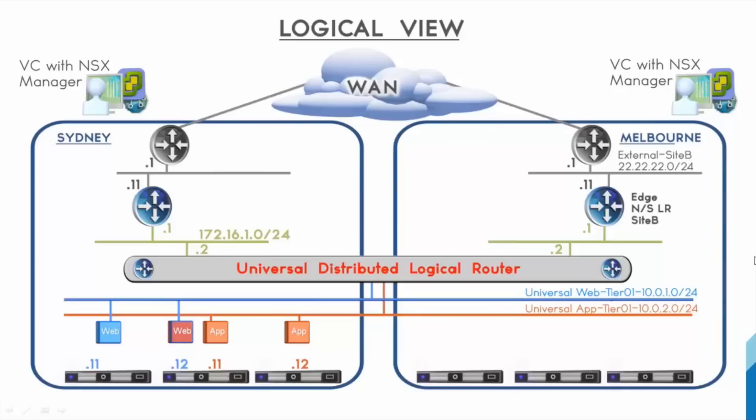We're running the virtual infrastructure management with vCenter 6.0. On the top right and top left hand side, they'll form an enhanced linked mode. We also have NSX 6.2 that runs in primary and secondary modes for high availability.